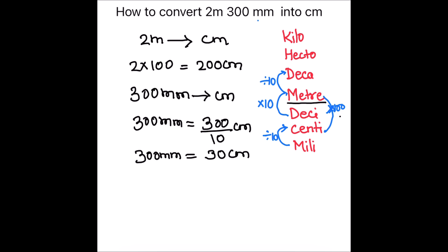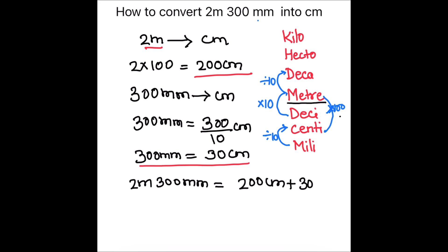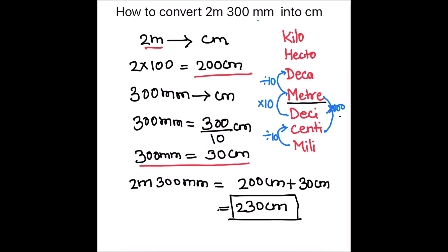Now we have 300 millimeters as 30 centimeters and 2 meters as 200 centimeters. We add the two results: 2 meters 300 millimeters equals 200 centimeters plus 30 centimeters, which equals 230 centimeters. This is our final answer.